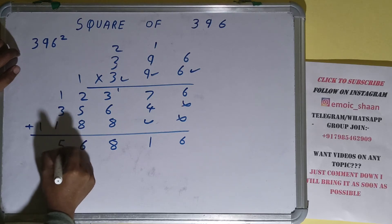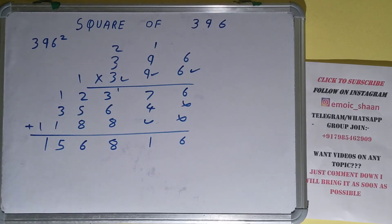0, 5, 1. Okay, so the answer will be 156816. That will be square for the number 396. So this is all. If you found the video helpful, please do hit the like button, do consider subscribing, and thanks for watching.